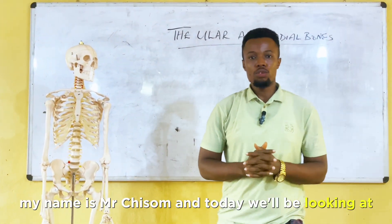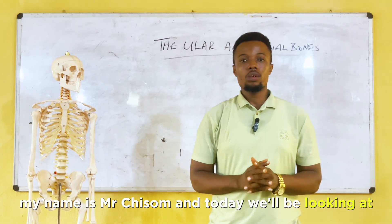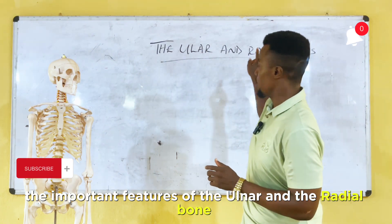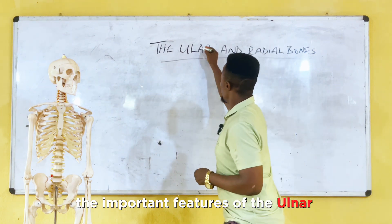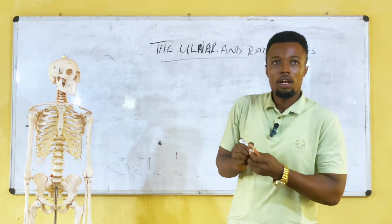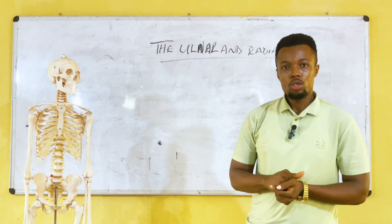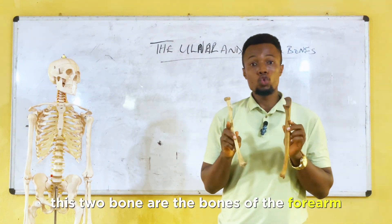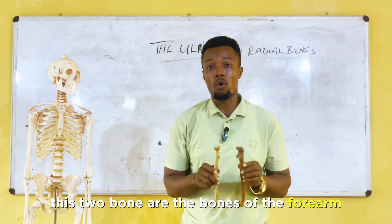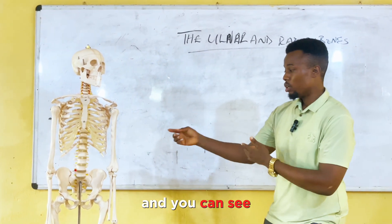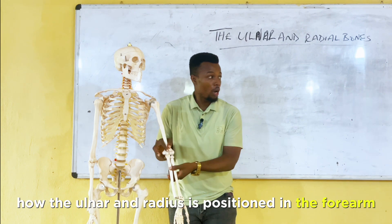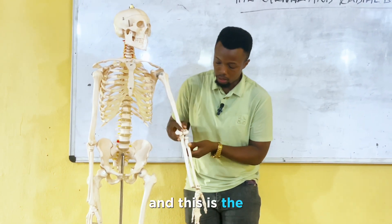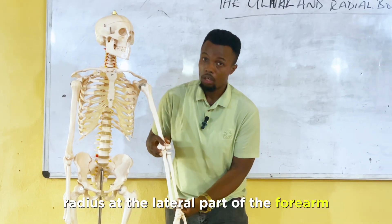Good day everyone. My name is Mr. Chisum and today we will be looking at the important features of the ulna and the radial bone. This is the ulna bone and this is the radial bone. These two bones are the bones of the forearm, and you can see how the ulna and radius are positioned in the forearm. The ulna is at the medial part of the forearm and the radius is at the lateral part of the forearm.